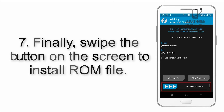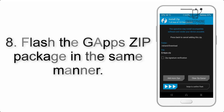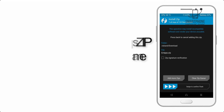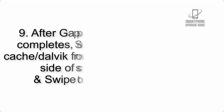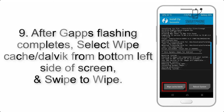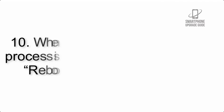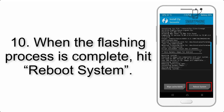Step 7: Swipe the button on screen to install the ROM file. Step 8: Flash the gapps zip package in the same manner. Step 9: After gapps flashing completes, select Wipe Cache and Dalvik from the bottom left side of the screen and swipe to wipe.